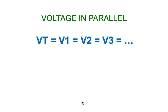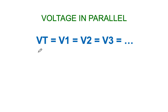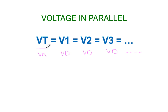The way we describe that mathematically is: V_total = V1 = V2 = V3. The voltage total is the applied voltage, and V1 is the voltage drop across lamp 1, V2 is the voltage drop across lamp 2, and V3 is the voltage drop across lamp 3, and so on. No matter how many are added in parallel, they will always equal each other and equal the total or applied voltage to the circuit.